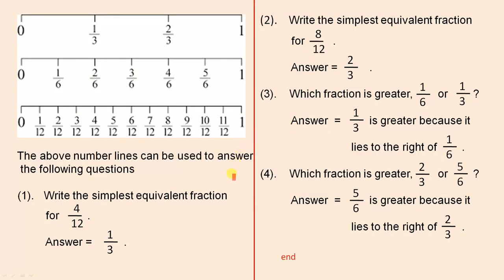The above number lines can be used to answer the following questions. Write the simplest equivalent fraction for 4 over 12: there is 4 over 12, and the two equivalent fractions are 2 over 6 and 1 over 3 — 1 over 3 is the simplest, so the answer is 1 over 3. Write the simplest equivalent fraction for 8 over 12: there is 8 over 12, and the equivalent fractions are 4 over 6 and 2 over 3 — 2 over 3 is the simplest, so the answer is 2 over 3.